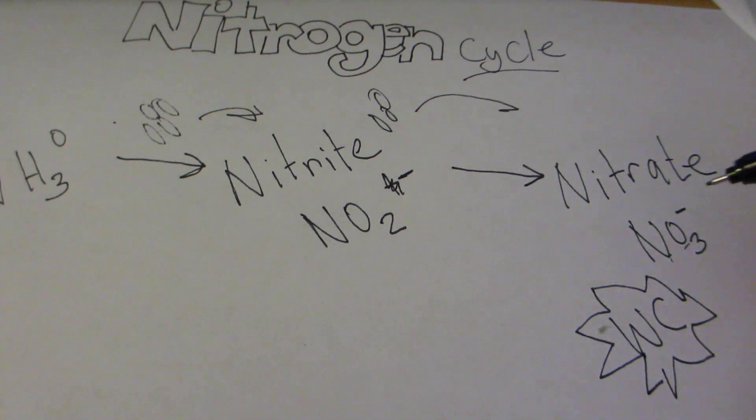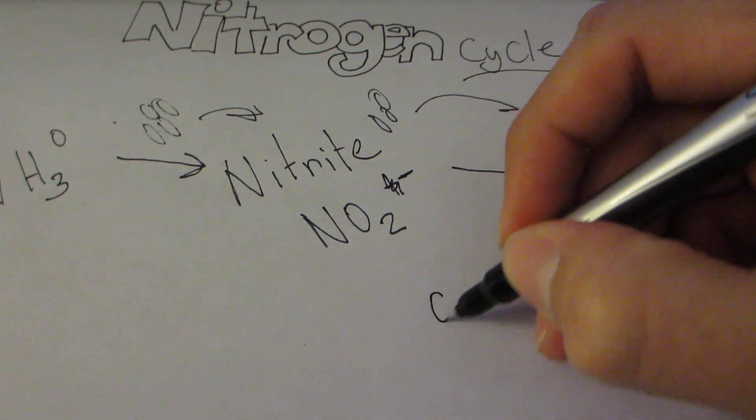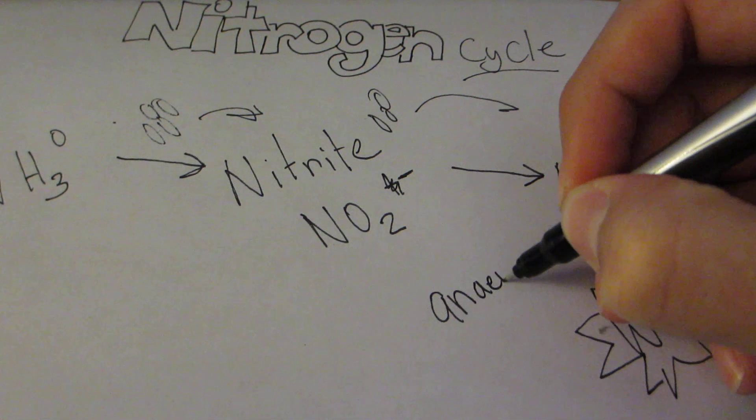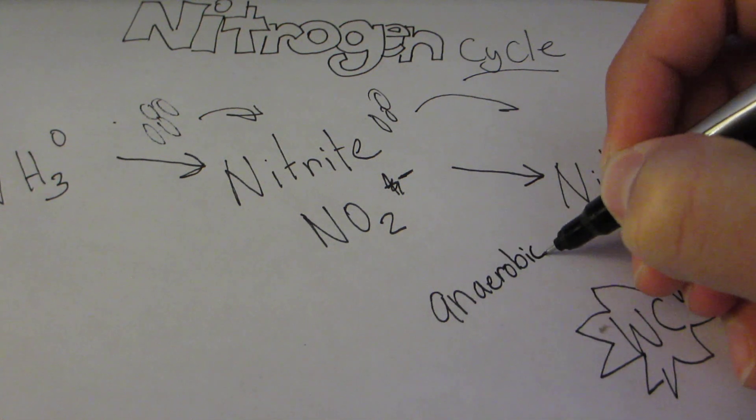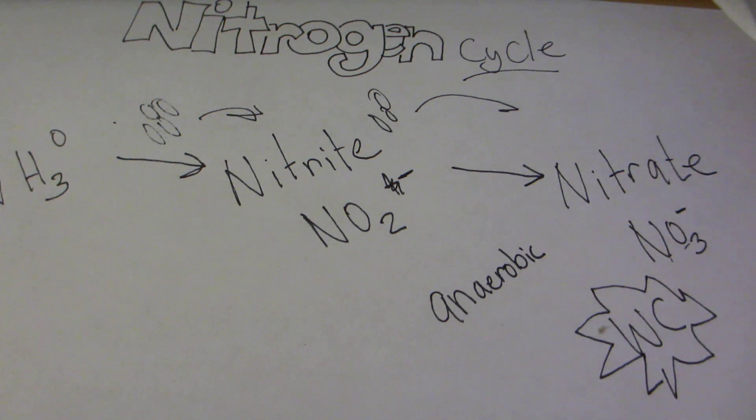The thing with denitrifying bacteria is that they're anaerobic, and this is a term that you might want to be familiar with. Anaerobic means that they don't use oxygen.